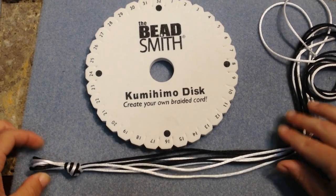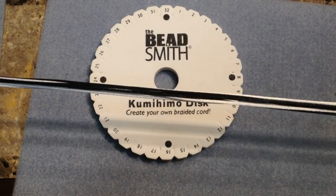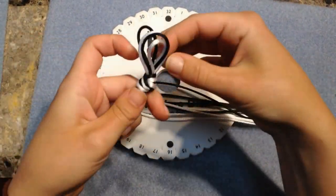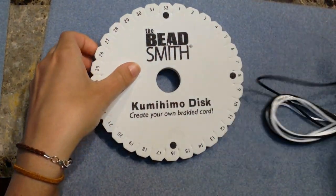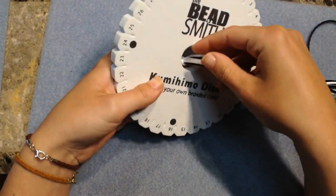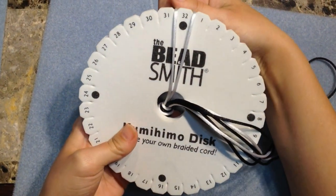I'm using rat tail and the Kumihimo disc. First, cut four pieces of rat tail and you're going to make a top knot so that way there's a loop. Place the loop down through the hole in the Kumihimo disc and then put two strands on either side of the dots.